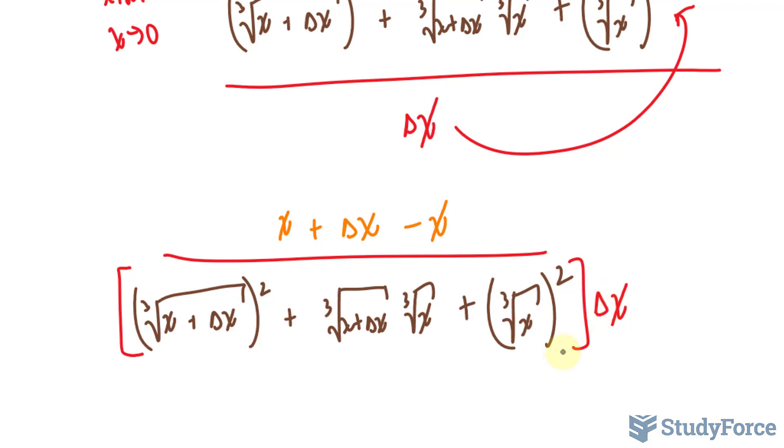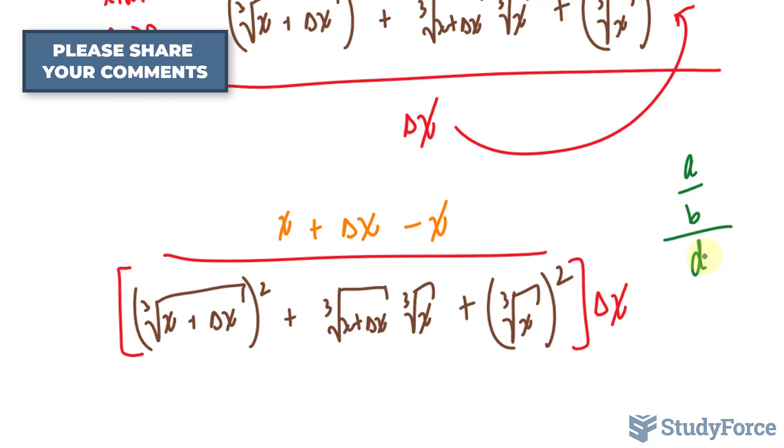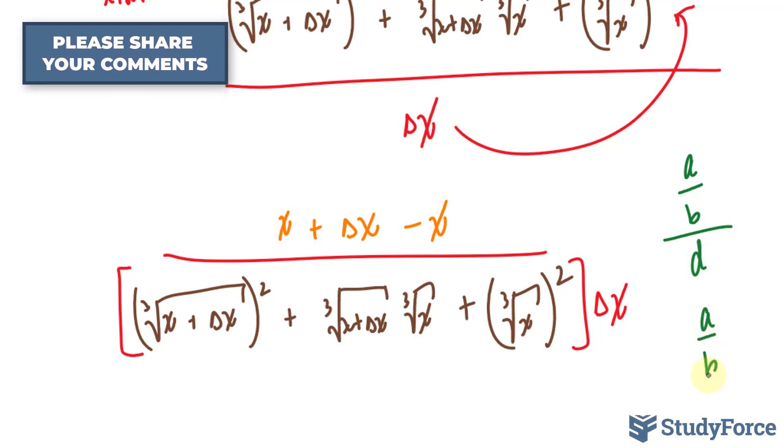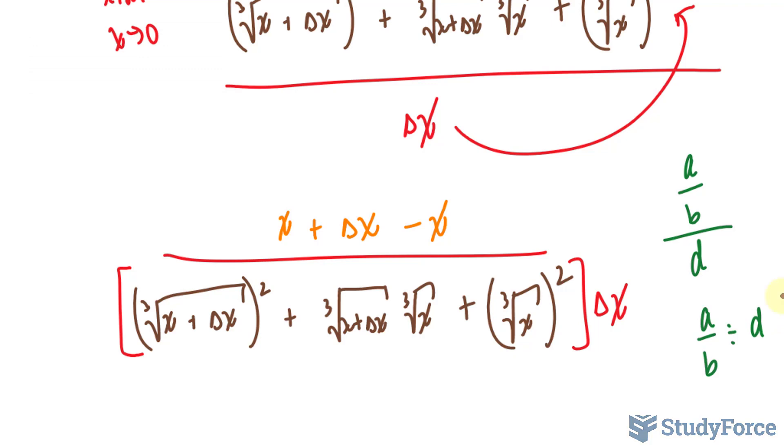Now, let's understand this. Why did this delta x go underneath? Well, just pretend that you had a fraction, a over b, all over d. This is like saying a over b divided by d. And as we know, with fractions, you will flip d over 1. The d goes at the bottom, and it gets multiplied to the denominator. And that's exactly what happened here. Anyway, let's continue.